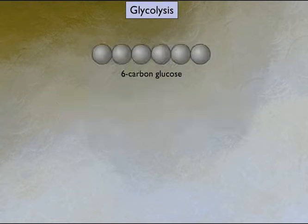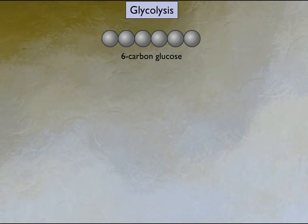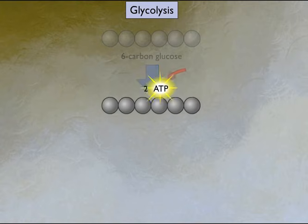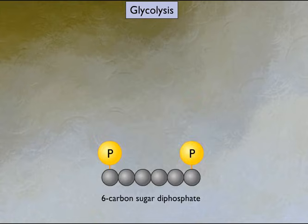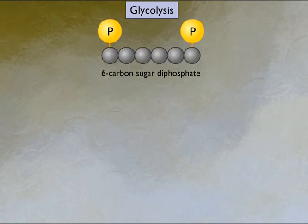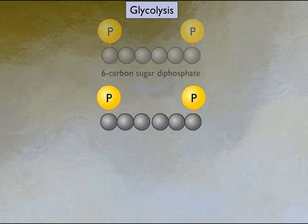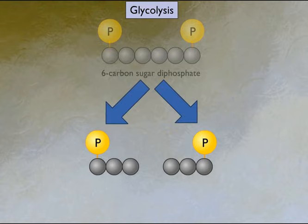The initial steps in glycolysis are the additions of two phosphates to the glucose molecule at the expense of two molecules of ATP. The result is a six-carbon sugar diphosphate molecule and two low-energy adenosine diphosphate molecules, or ADP. This six-carbon sugar diphosphate molecule is then split into two three-carbon molecules.